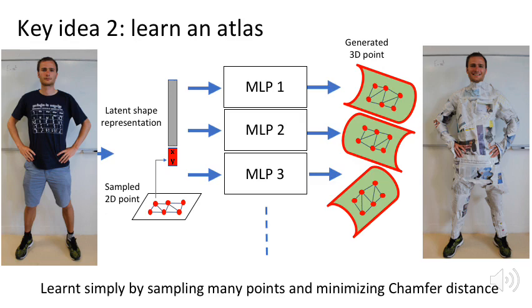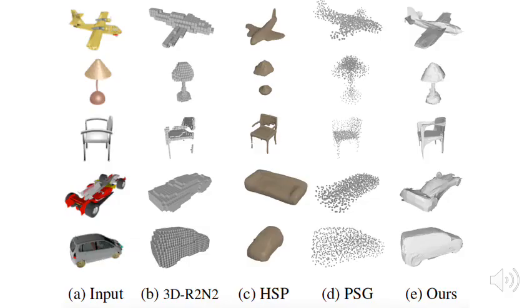We show that this simple representation leads to better shape generation, improved generalization, and several free applications. Such as single view reconstruction here. From a single image, from left to right, we compare with voxels, octrees, and point cloud methods. Our result on the right outputs a surface representation. In the paper, we show many quantitative comparisons, as well as experiments on surface reconstruction given an input 3D point cloud.